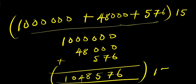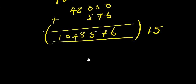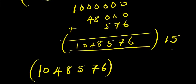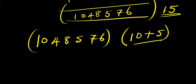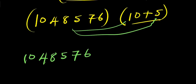To multiply 1,048,576 by 15, we express 15 as 10 plus 5. So we will multiply 1,048,576 by 10 to get 10,485,760, and then separately multiply 1,048,576 by 5.